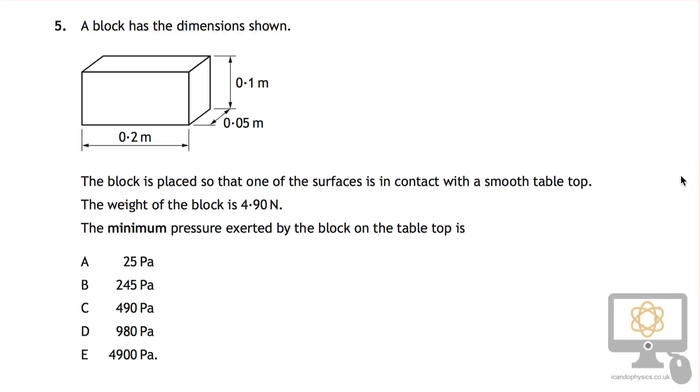So this is question 5 from the National 5 2016 paper, and it's all about trying to find the minimum pressure. That's the key part here: what is the minimum pressure exerted by the block on the table.